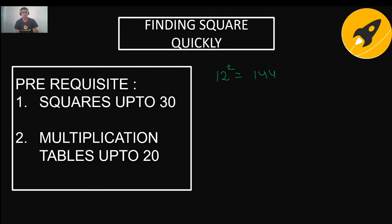I'll cover the squares up to 10 quickly: 1, 4, 9, 16, 25, 36, 49, 64, 81, 100. Then from 11: 11² = 121, 12² = 144.